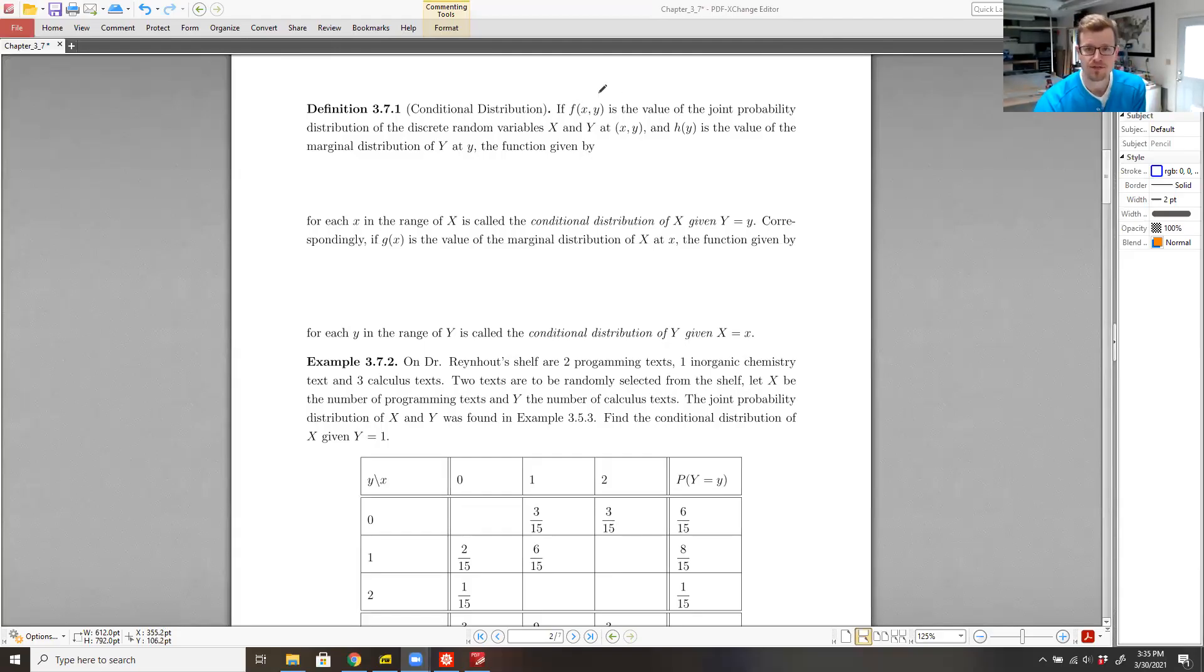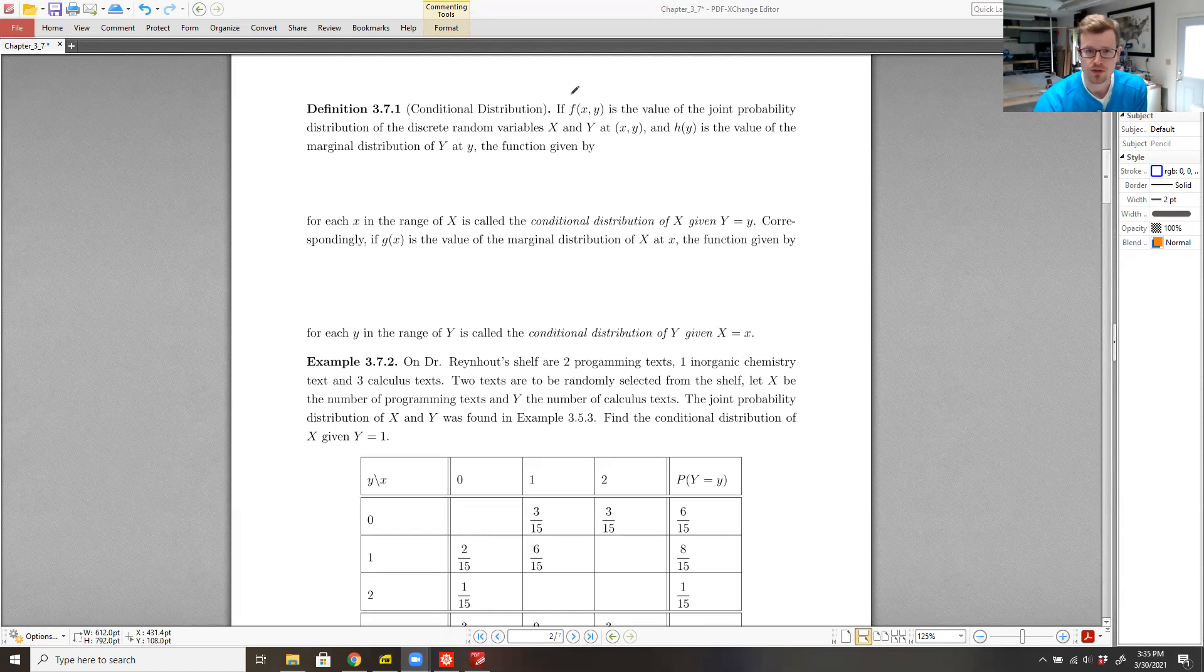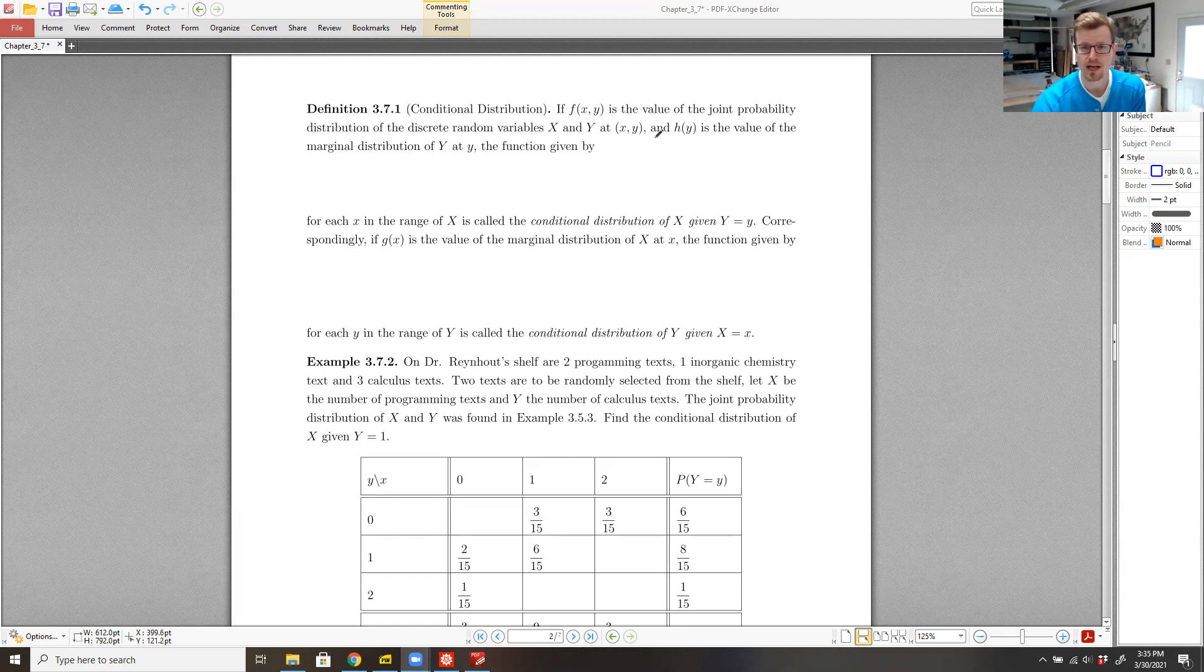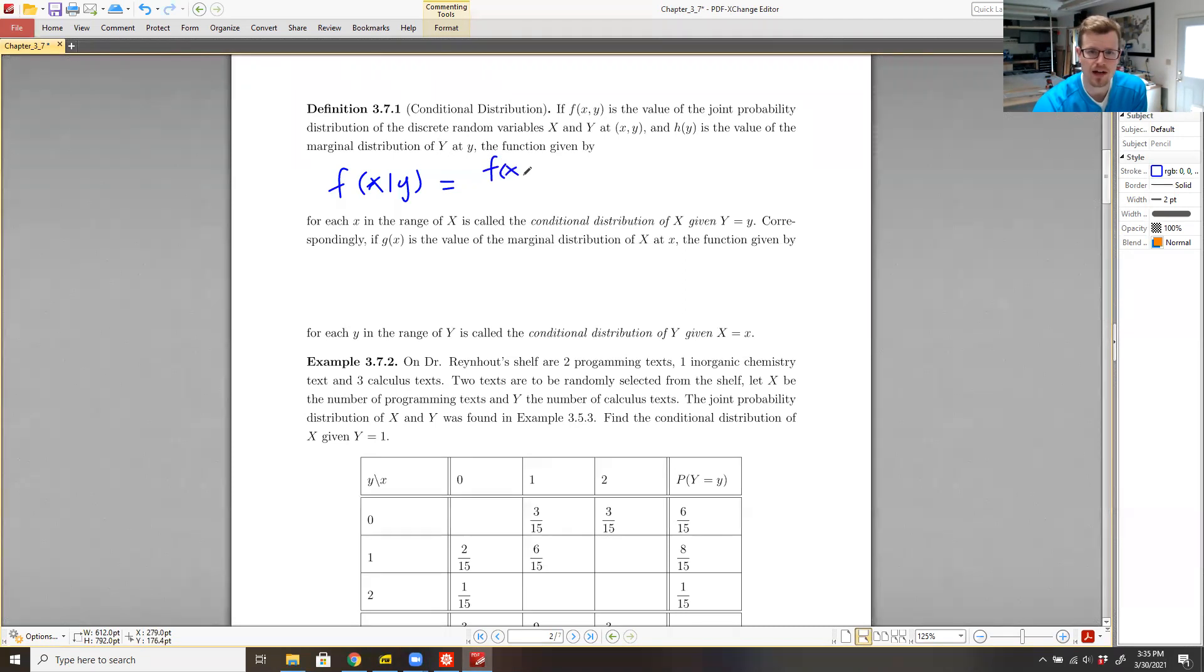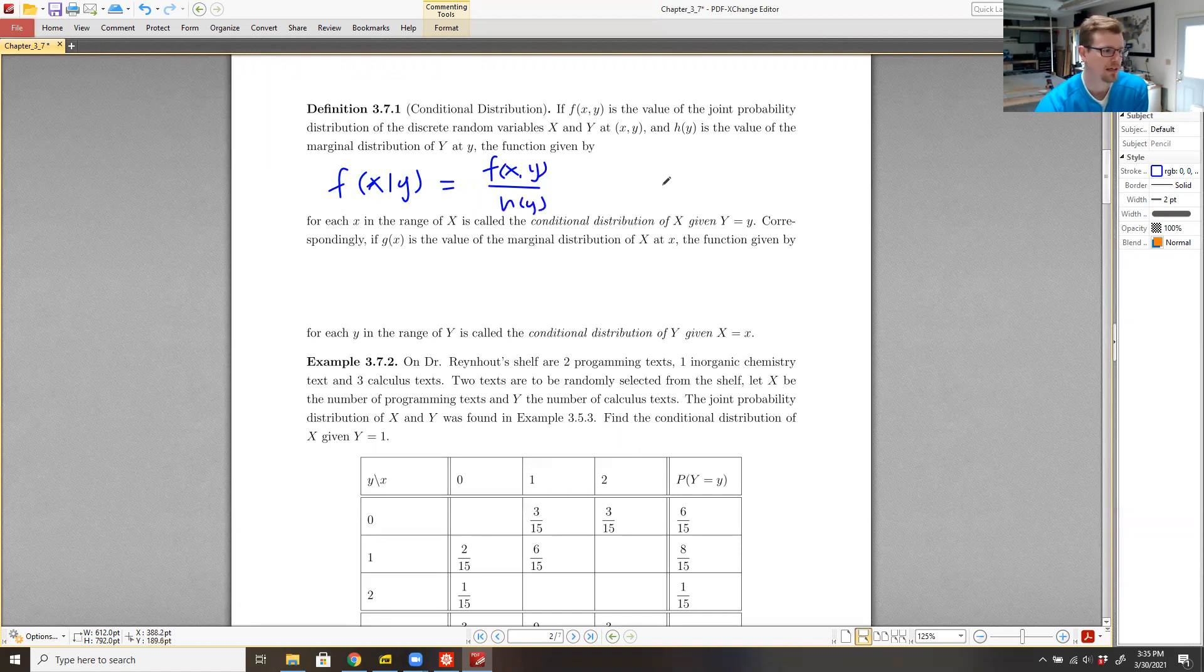So if we have f of xy, the joint probability distribution of the discrete random variables x and y, and we have the marginal distribution h of y giving probabilities of y, then the function given by f of x given y, the conditional distribution, is given by f of xy divided by h of y.